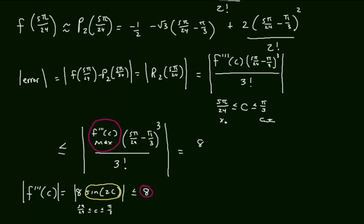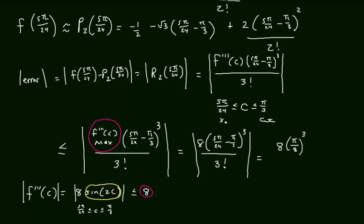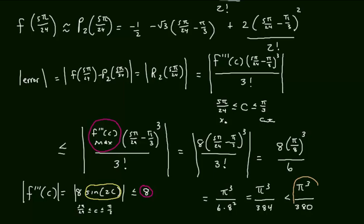So the error is less than or equal to 8 × (5π/24 − π/3)³ over 3!. Simplifying: 5π/24 − π/3 = 5π/24 − 8π/24 = −π/8, so we get 8 × (π/8)³ over 6, which equals π³ over 6 × 64 = π³/384. And π³/384 is less than π³/380 — that was our goal, to show the error is less than π³/380 using E2, Lagrange error bound.